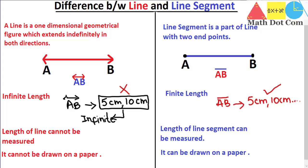This is all about how line and line segment differ from each other. At the end of this lecture, you should have a clear concept of how a line differs from a line segment. In short, a line segment is a subset of a line — that's it. You just need to understand that a line segment itself has no standalone concept; it is actually drawn from the line.